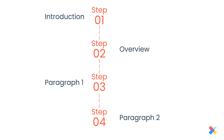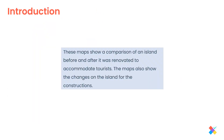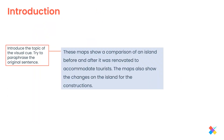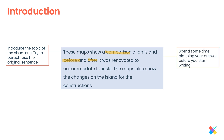Let's have a look at the sample answer and see exactly how I have used this structure. Remember that this sample answer has been written by a candidate aiming at band 5 or 5.5. In the introduction, you need to introduce the topic of the visual cue — for example: 'These maps show a comparison of an island before and after it was renovated to accommodate tourists,' plus another sentence about the changes on the island for the constructions.